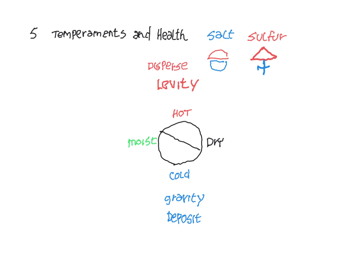So let's look at the symbols that the alchemists used. We'll move sulfur out here into the hot and dry pole, and we'll move salt into the cold and moist pole, because salt and sulfur are combinations of levity and gravity.